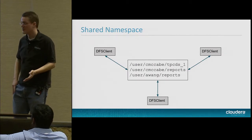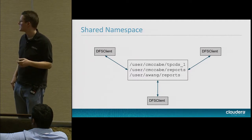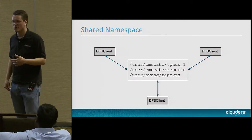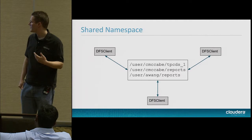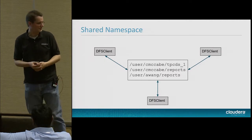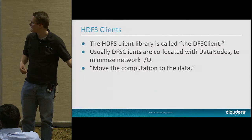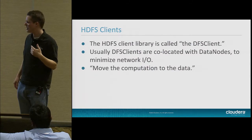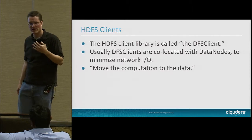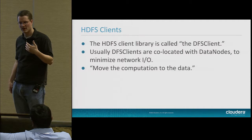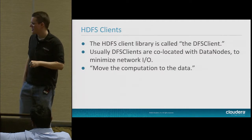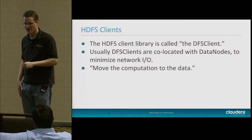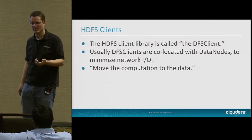HDFS provides the shared namespace, which is important because we have a bunch of files and want to access them from any node in the cluster, not just the node that wrote them. Every DFS client has access to every file through the shared namespace. We usually co-locate the DFS client with the data node to avoid that network hop when reading local data — part of moving the computation to the data.